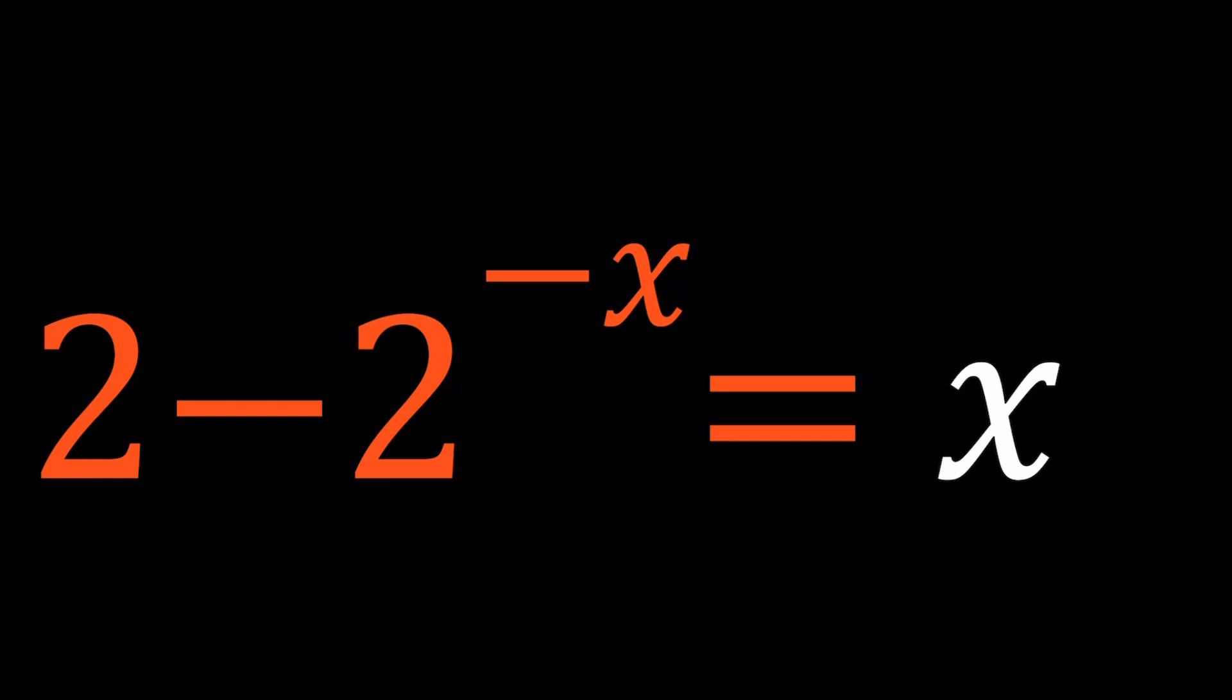We have 2 minus 2 to the power negative x equals x, and I call this equation non-standard because we have an exponential on the left hand side and a linear function on the right hand side.